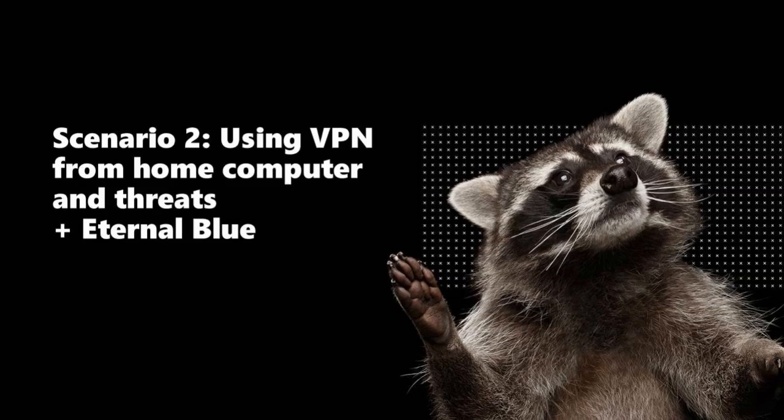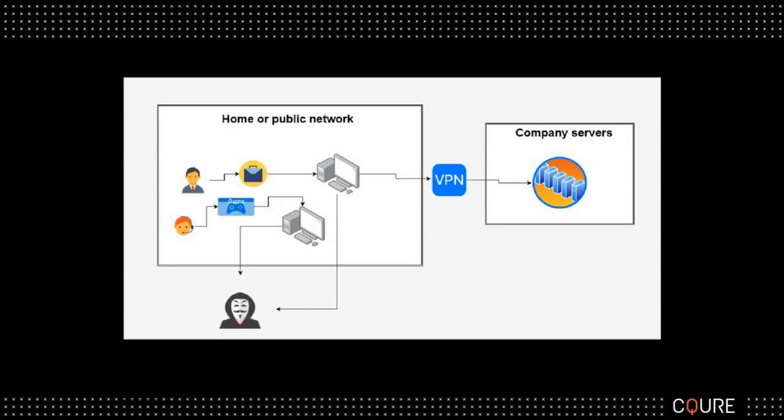Mike now demonstrates how a home computer connected to VPN can become a threat to internal corporate systems. Even if the VPN connection itself is new, the device may already be infected — or another device on the home network may be compromised. An attacker on that infected device can use the VPN connection to scan internal corporate networks and perform attacks from inside the perimeter.